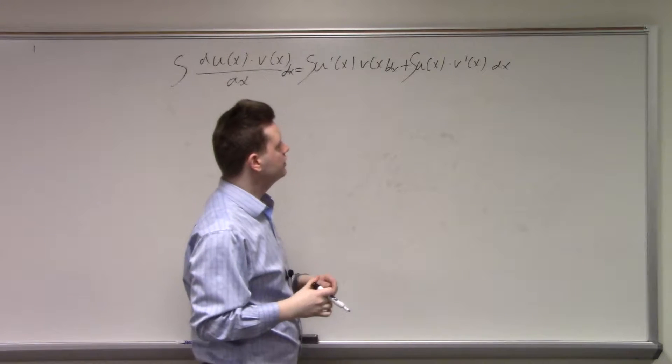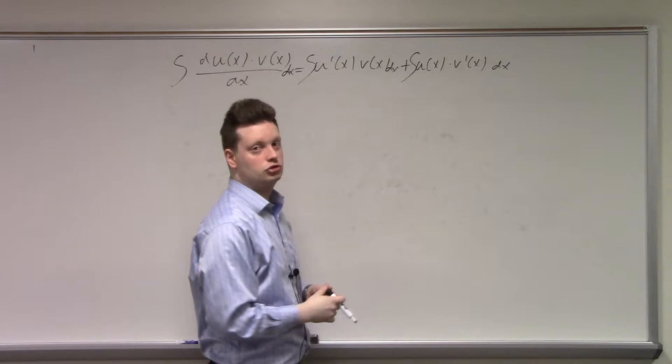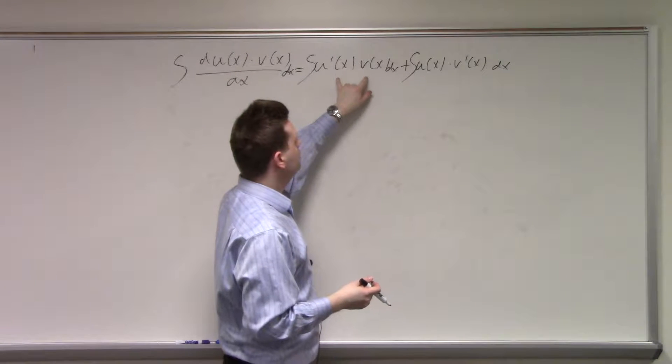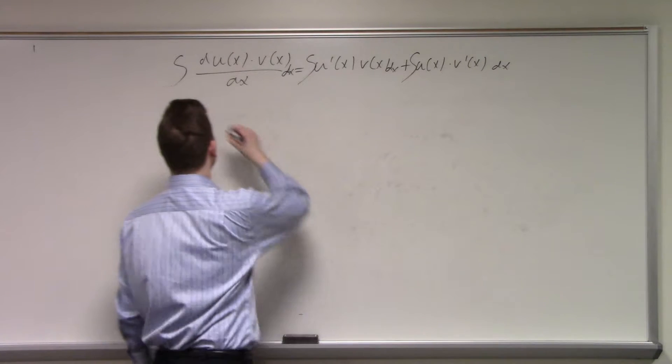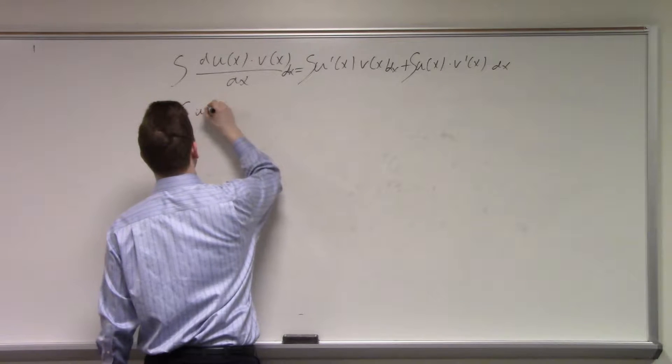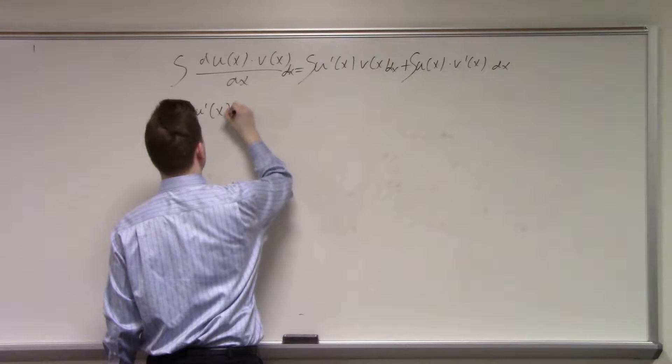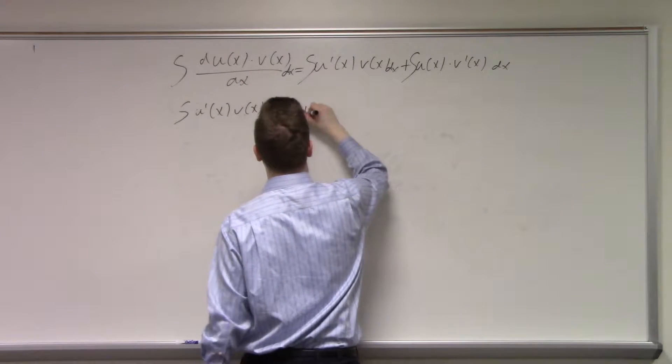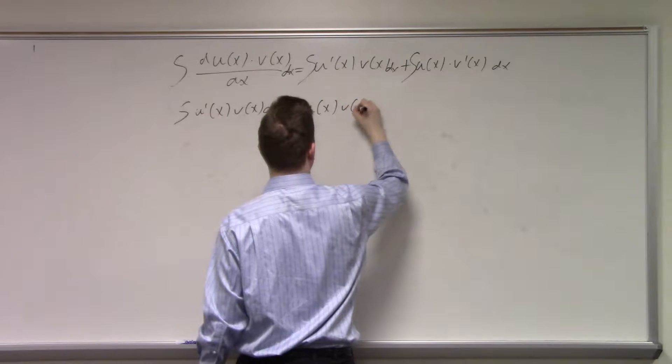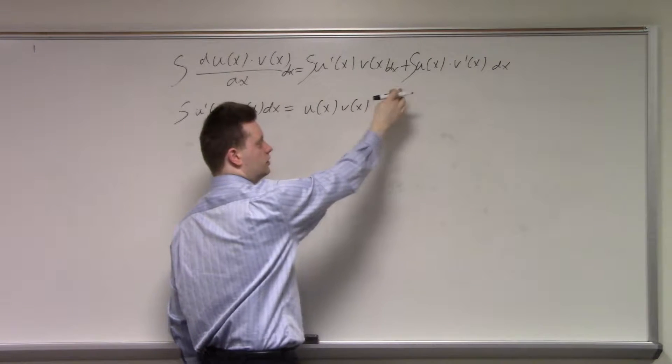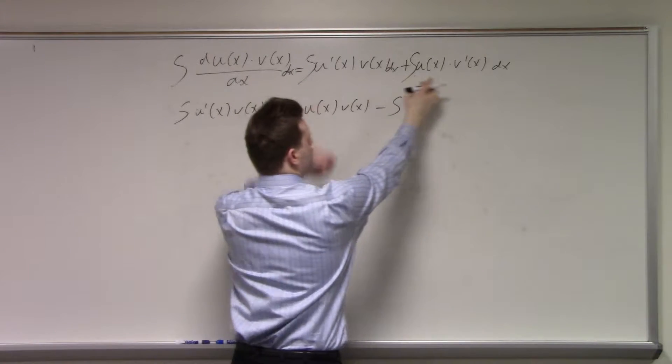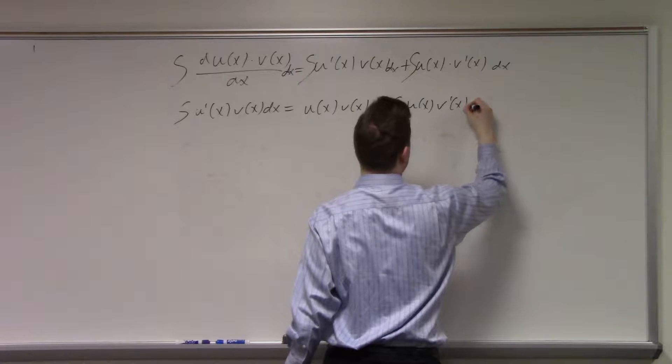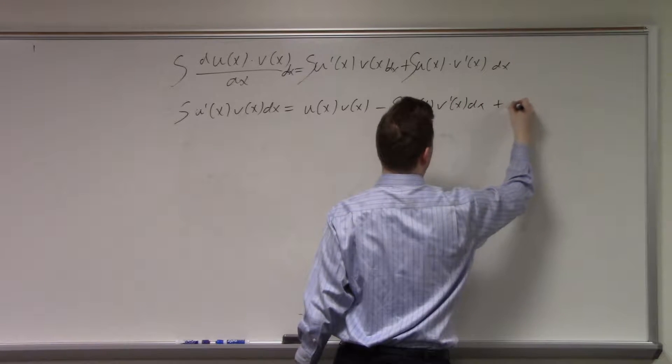If we use that, we can rearrange it to have an integral on the left-hand side. Let's take the integral here to the left-hand side, and we get integral of u'(x) times v(x) dx is equal to u(x) v(x) minus, since we put this the other side, it's positive, so this becomes negative, u(x) v'(x) dx plus some constant.